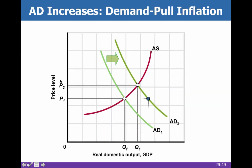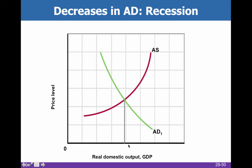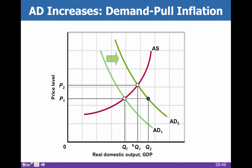When we have demand-pull inflation, it happens when demanders with too much money pull up prices. We might hope price would remain constant, giving us output Q2, but typically because we're in the short run with a diagonally upward-sloping aggregate supply curve, we go from price level P1 up to P2, and we only reach Q1 rather than Q2. Some of the extra money pumped into the economy is absorbed by making more stuff, and some by charging higher prices.